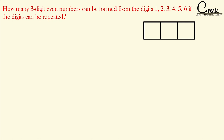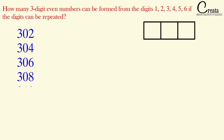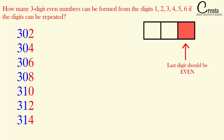Even numbers are those which can be divided by 2 — like 2, 4, 6, 8, 10, 12, 14. We have to form a three-digit even number. How to identify it? All those three-digit numbers whose last digit is either 0, 2, 4, 6, or 8 are even numbers. For example, 302, 304, 306, 308, 310, 312, 314, 316, 318 — in all these, the last digit is either 0, 2, 4, 6, or 8. So the trick is: the last digit should be even.